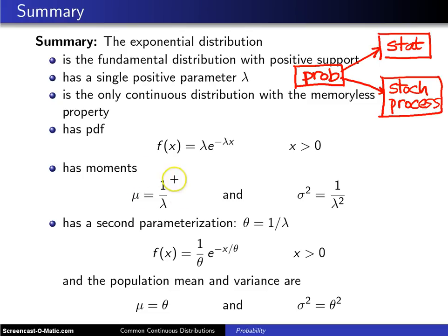The moments here are the population mean mu is 1 over lambda. The population variance sigma squared is 1 over lambda squared. One last thing that is new about the exponential distribution is not everybody parametrizes it in this fashion.